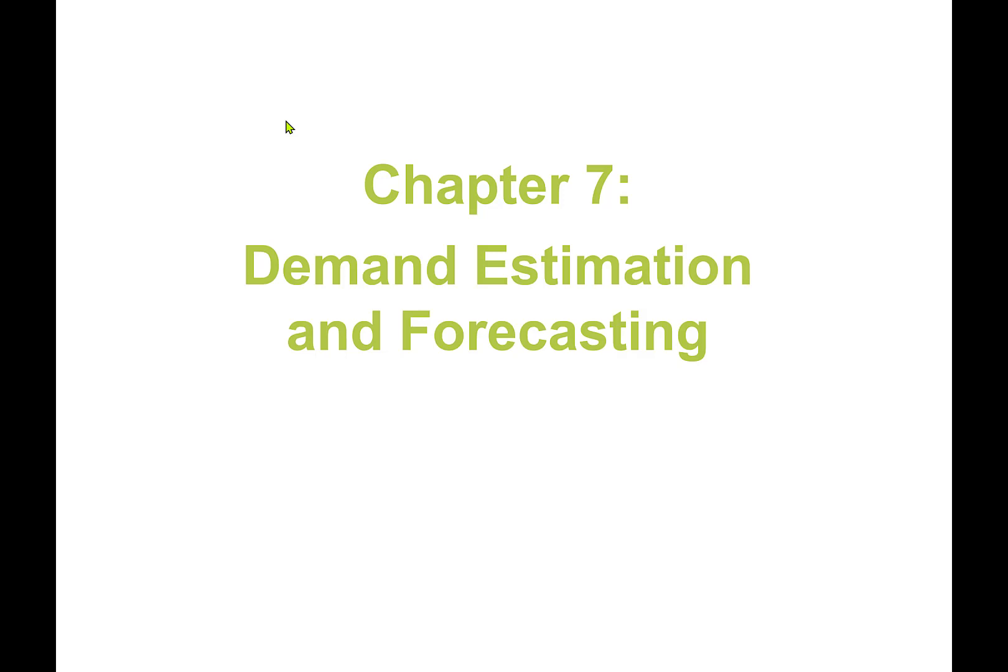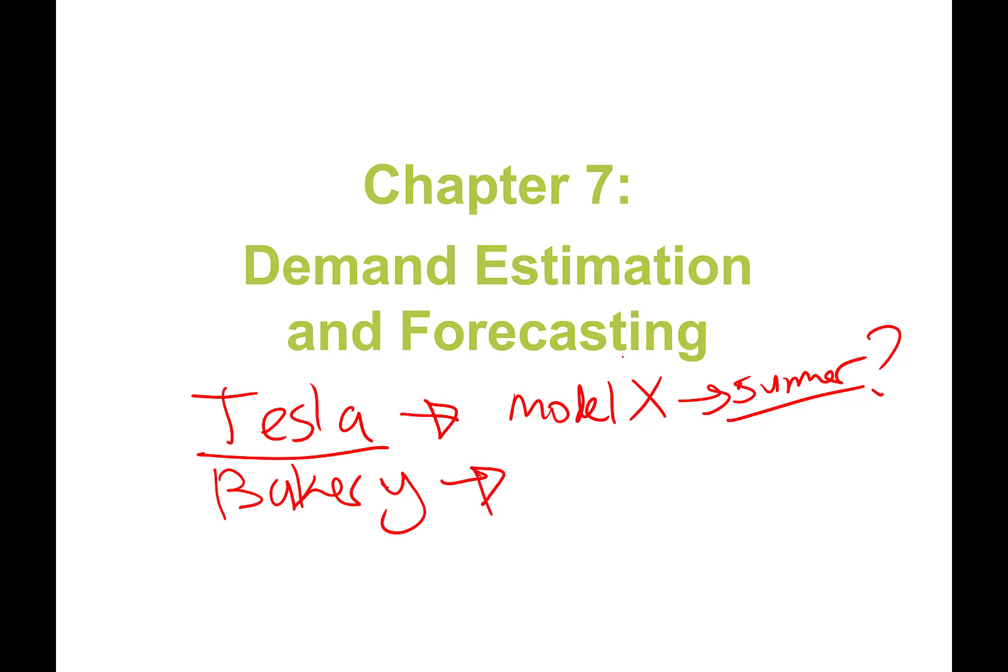If you think about a company like Tesla, they have to make decisions on how many Model X to produce by the summer. Or if you're the manager of a bakery national chain, you have Valentine's Day care packages—how many should you produce? Another example: at a local bar restaurant, the owner asked me how do I predict seasonal behavior? It was February and he said sales were really bad. The demand was high, but alcohol sales were very low.